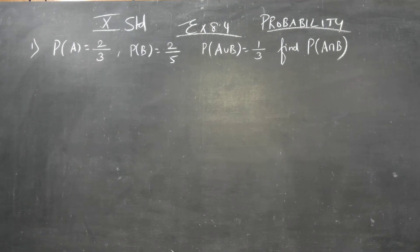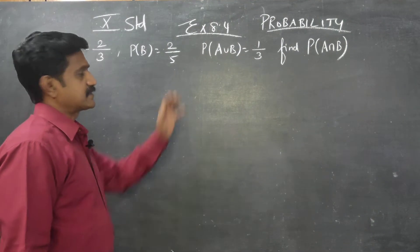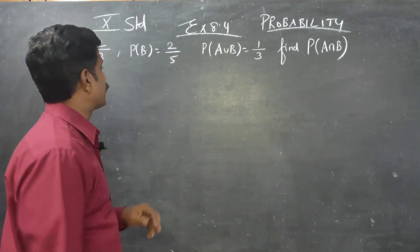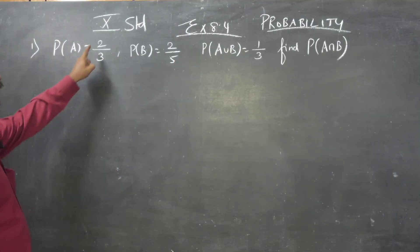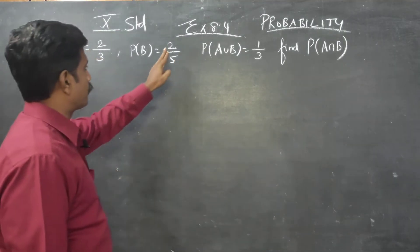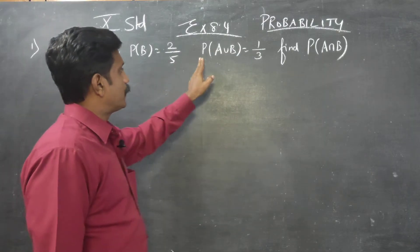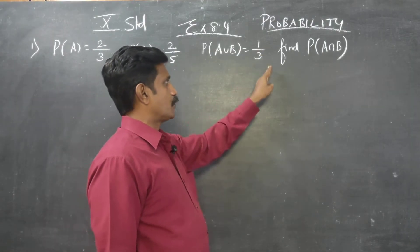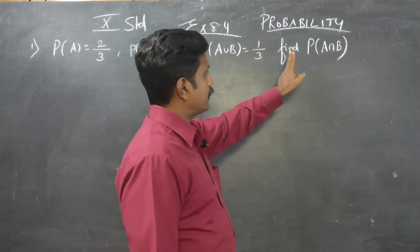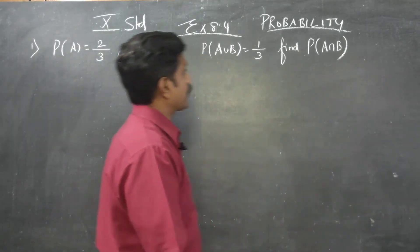Dear 10th standard students, in probability, exercise number 8.4: the probability of A is equal to 2 by 3, probability of B is equal to 2 by 5, probability of A union B is equal to 1 by 3. Find the probability of A intersection B.